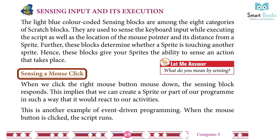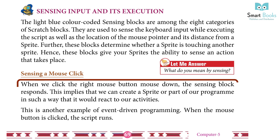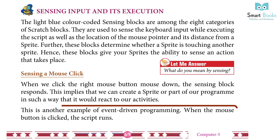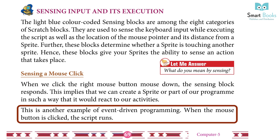Sensing a mouse click: When we click the right mouse button (mouse down), the sensing block responds. This implies that we can create a sprite or part of our program in such a way that it would react to our activities. This is another example of event-driven programming — when the mouse button is clicked, the script runs.